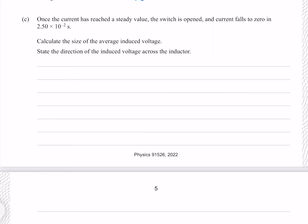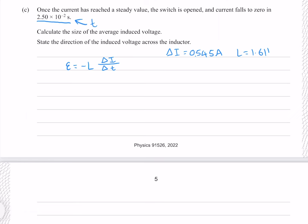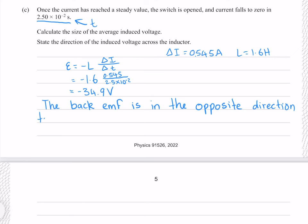Once the current has reached a steady value the switch is opened, and the current falls to zero in 2.5 times 10 to the minus 2 seconds. The equation for induced voltage is L times delta I over delta t, where the change in current is 0.545 amps, the time is 2.5 times 10 to the minus 2 seconds, and inductance is 1.6 henry. This gives negative 34.9 volts to 3 significant figures. The negative sign indicates the back EMF opposes the current change, so it acts in the same direction as VS and the current.